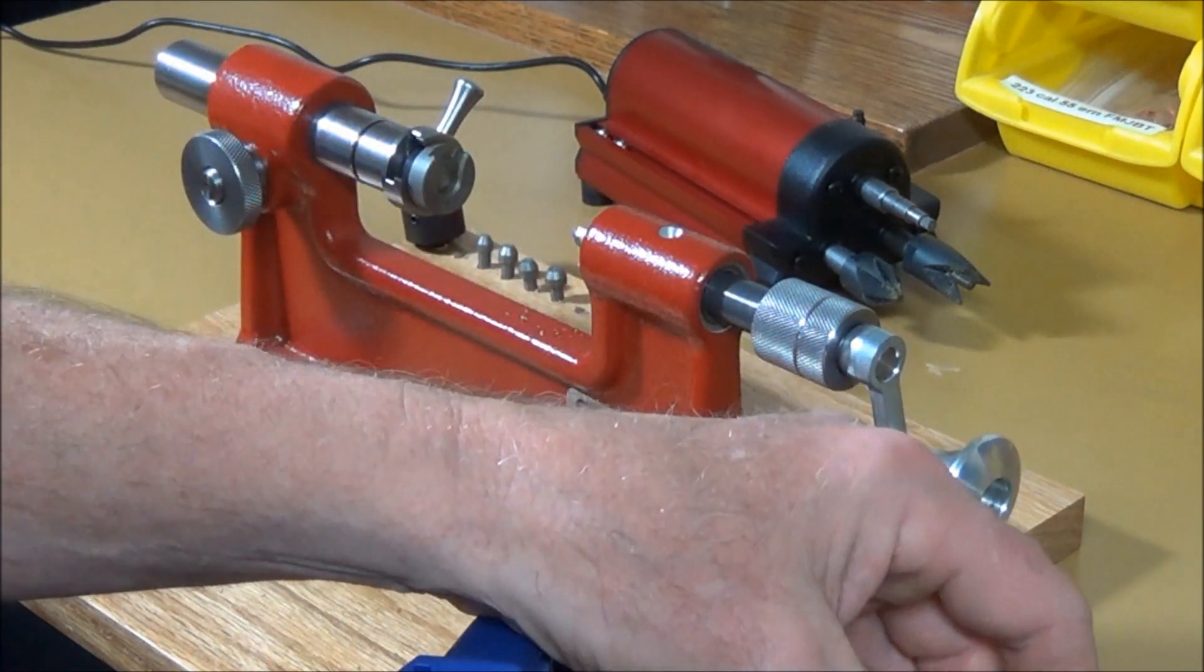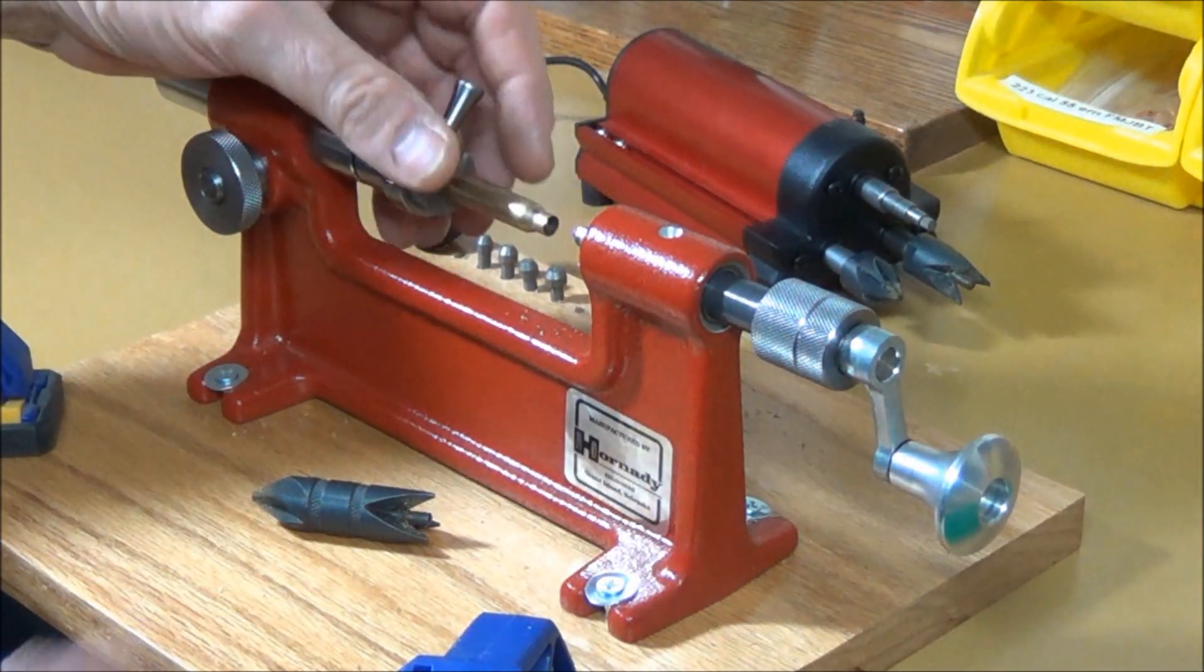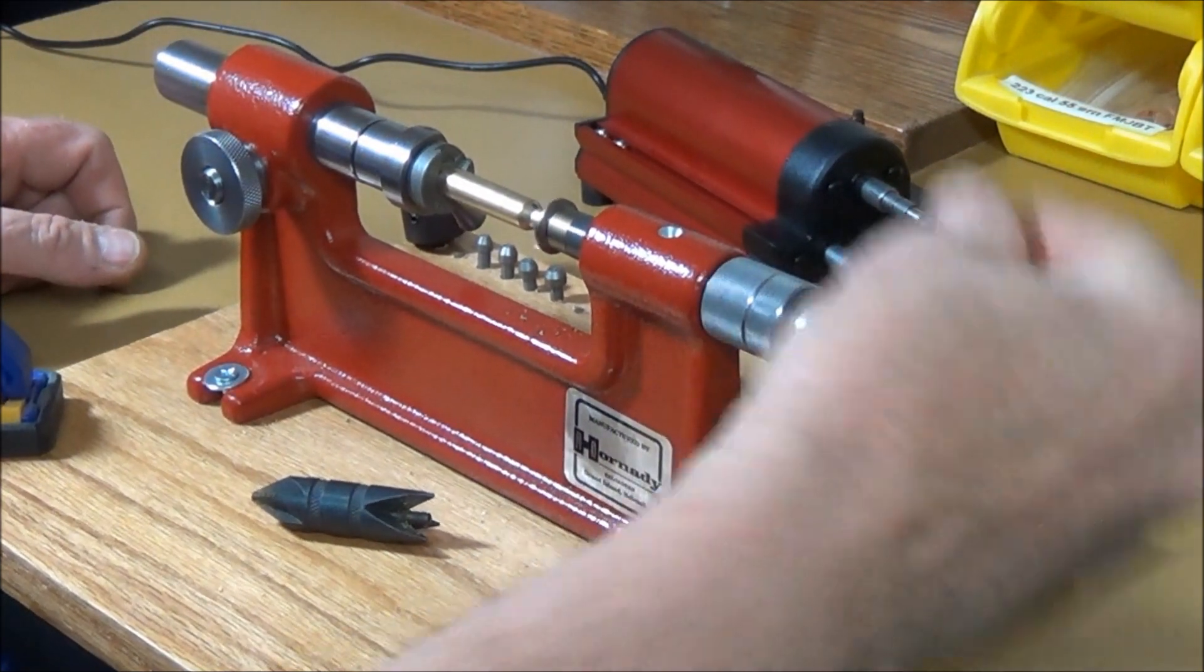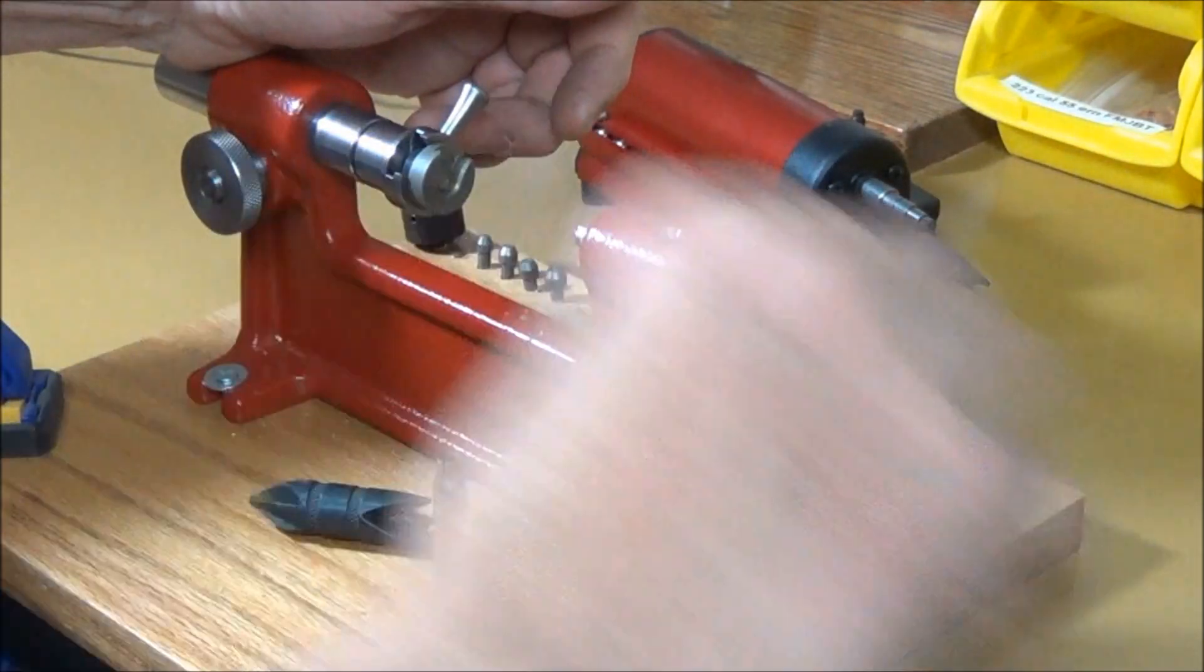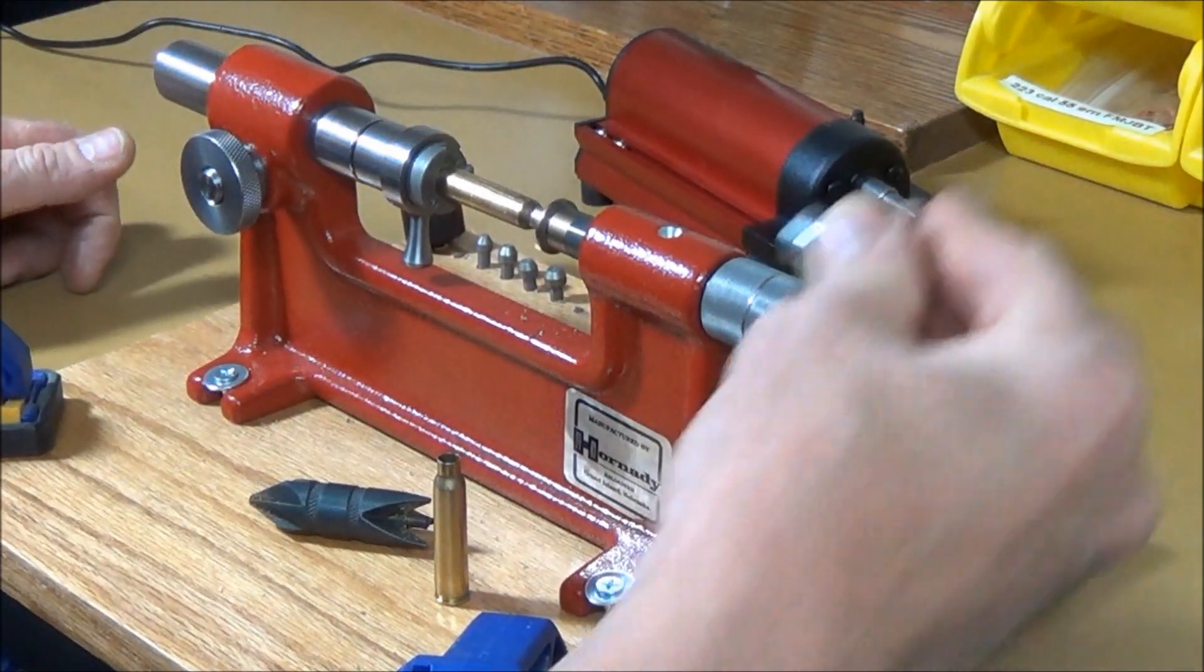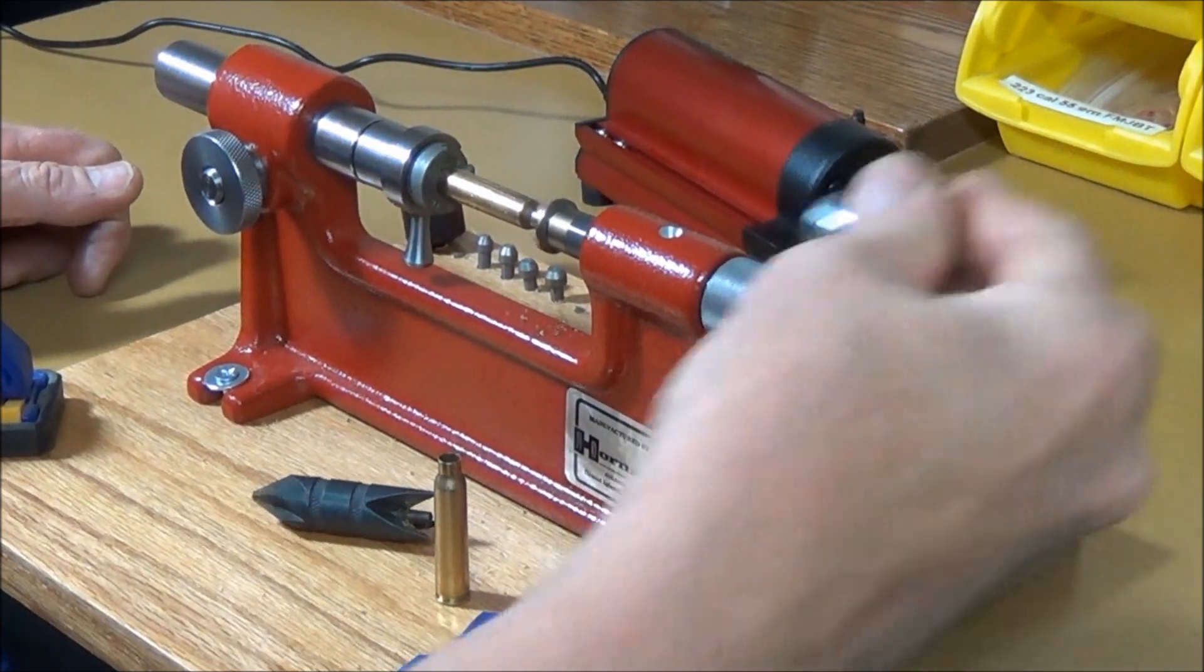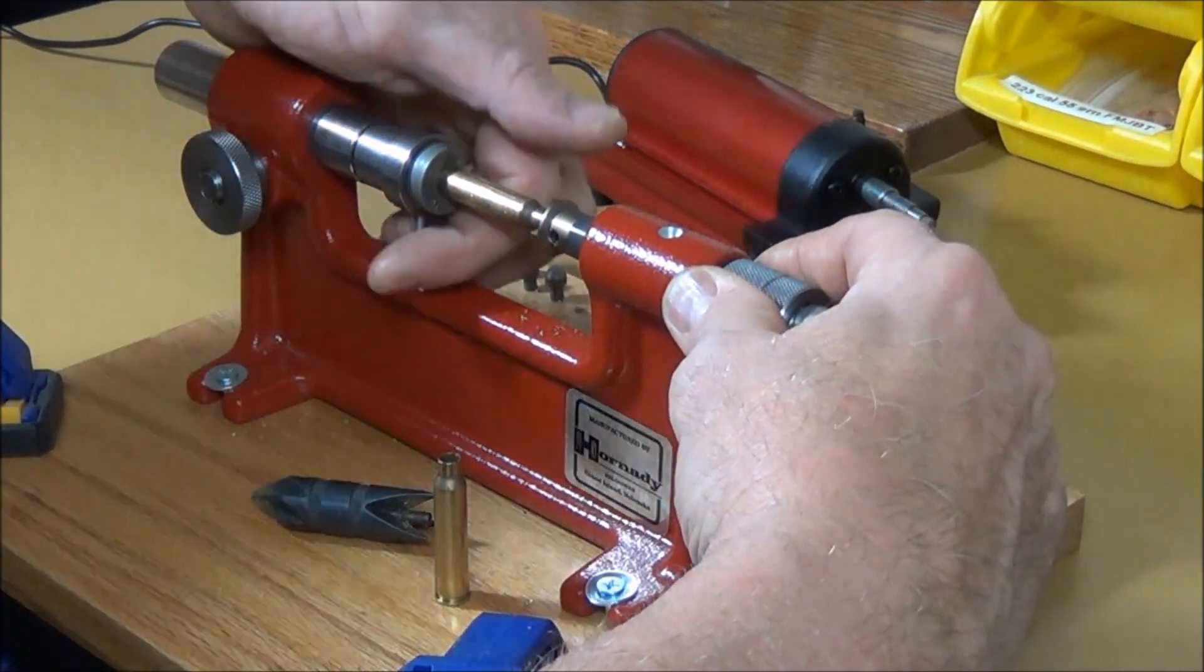The next step we have to do is we need to size all of our cases to the right length. According to the book, they should be at about 1.750. Using this little hand lathe, I'm going to go ahead and cut these down. That one actually appeared to be pretty good. Let's set that one off to the side. Let's find another one here. Set it around, lock her in place, and it will just cut the case all the way down to length. You can feel it kind of drag a little bit until it reaches the end of its cut. It's just very smooth.